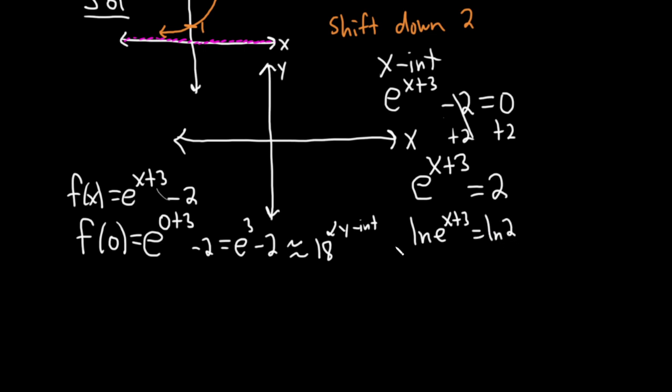Natural log of 2. And this goes away. Very powerful formula. Remember ln(e^x) = x. So all of this is just x + 3 = ln 2. And then subtract 3. x = ln 2 - 3.